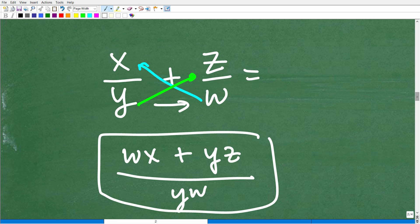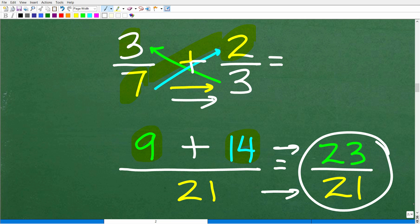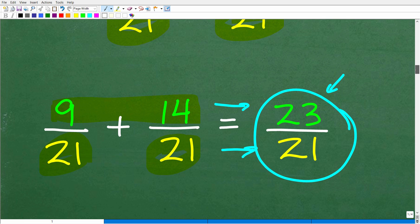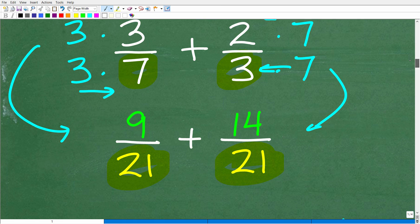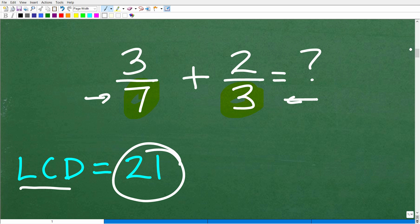This bow tie method is absolutely powerful. There's only one slight drawback: sometimes when you do this method, you may not get a fully simplified fraction, so you may have to reduce your fraction. But this still doesn't mean you don't have to know about the LCD. You have to know how to find the LCD because you use that in algebra as well.